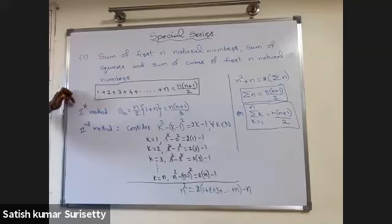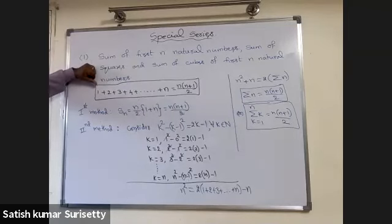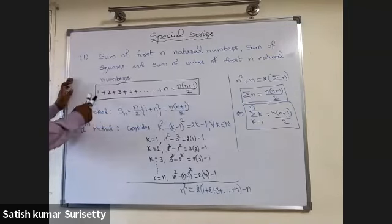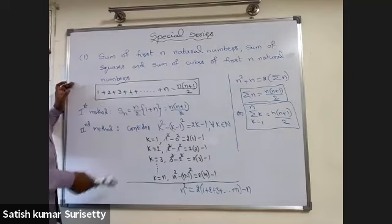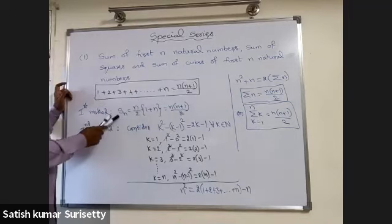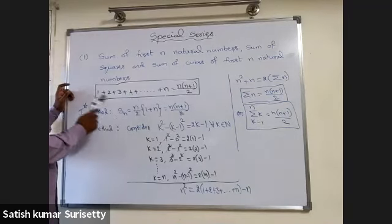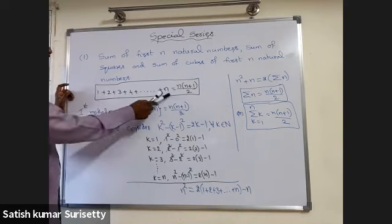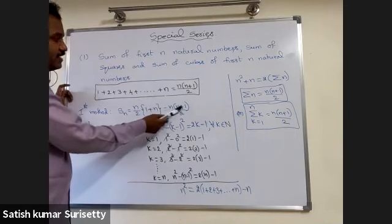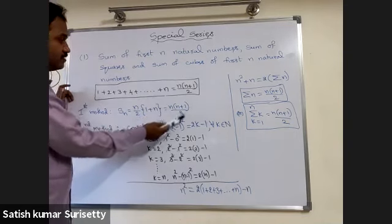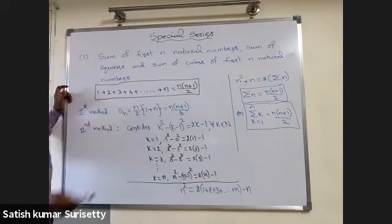For this first method, we have used arithmetic progression. Because the terms are in arithmetic progression, we can apply the sum of n terms of AP: Sn equal to n by 2 into first term plus last term, that is 1 plus n, which gives n into n plus 1 by 2.